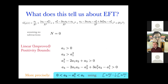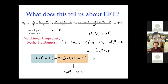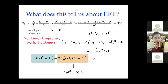So we can derive an infinite number of statements, although to be honest the first few are the only useful ones. That covered the linear bounds. We also have nonlinear bounds: for example, D_2 times D_0 is greater than D_1 squared — that is just the variance being positive. Rearranging: a_1 times a_3 is greater than a_2 squared. Combined with the linear bounds, a_4 times a_1 squared is greater than a_2 cubed, and so on. We have a huge number of positivity bounds already just at the level of two-point functions.